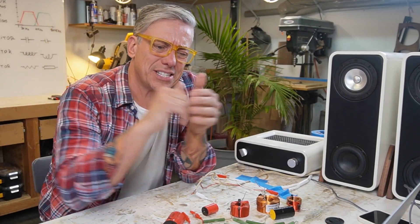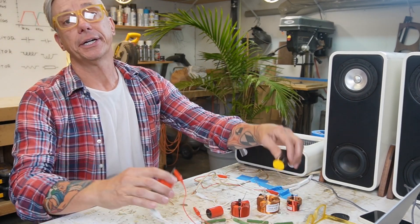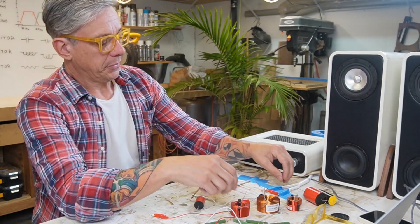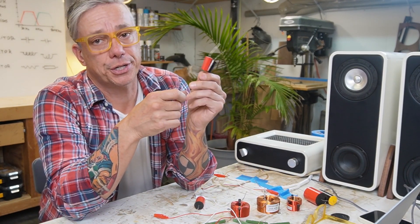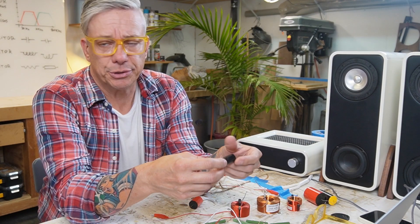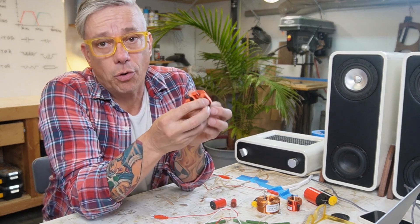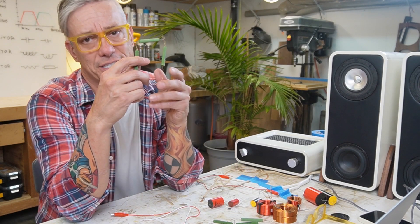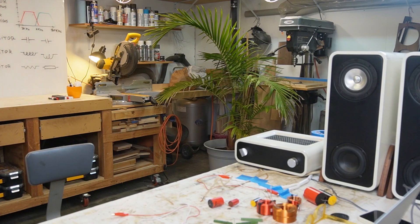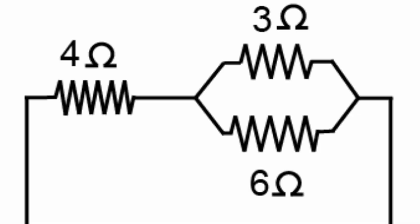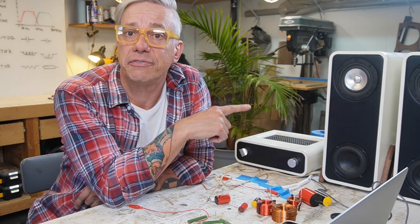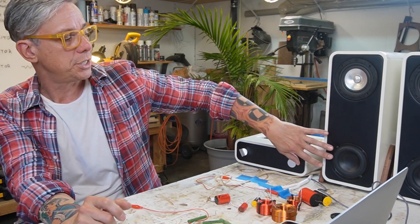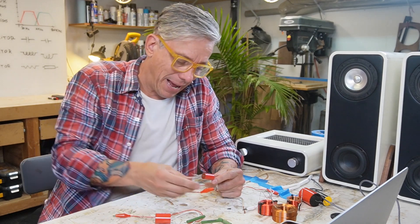I have here some audio-grade capacitors — they come in different sizes and are measured in microfarads, with voltage ratings from 100 to 800 volts. We have coils — or inductors — measured in millihenries. Then we have resistors in two different styles, measured in ohms. I'm gonna play a pink noise — a noise that emits frequencies from 20 Hz to 20 kHz, the full spectrum — so you guys can hear the difference those components make on this speaker. This is a full range driver and a 2.2 microfarad capacitor.